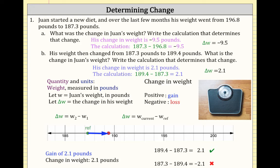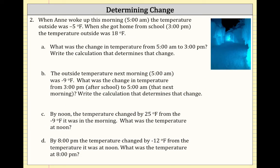Another way to express this: delta W equals the current weight minus the reference weight, where the reference weight represents the weight he started at.